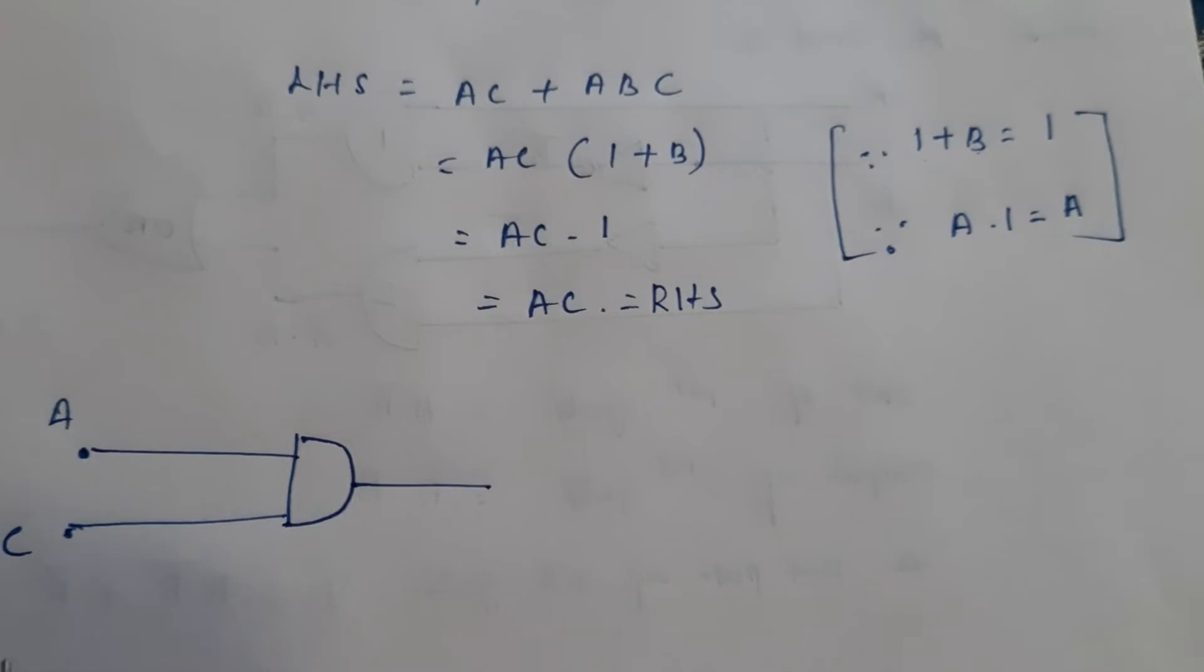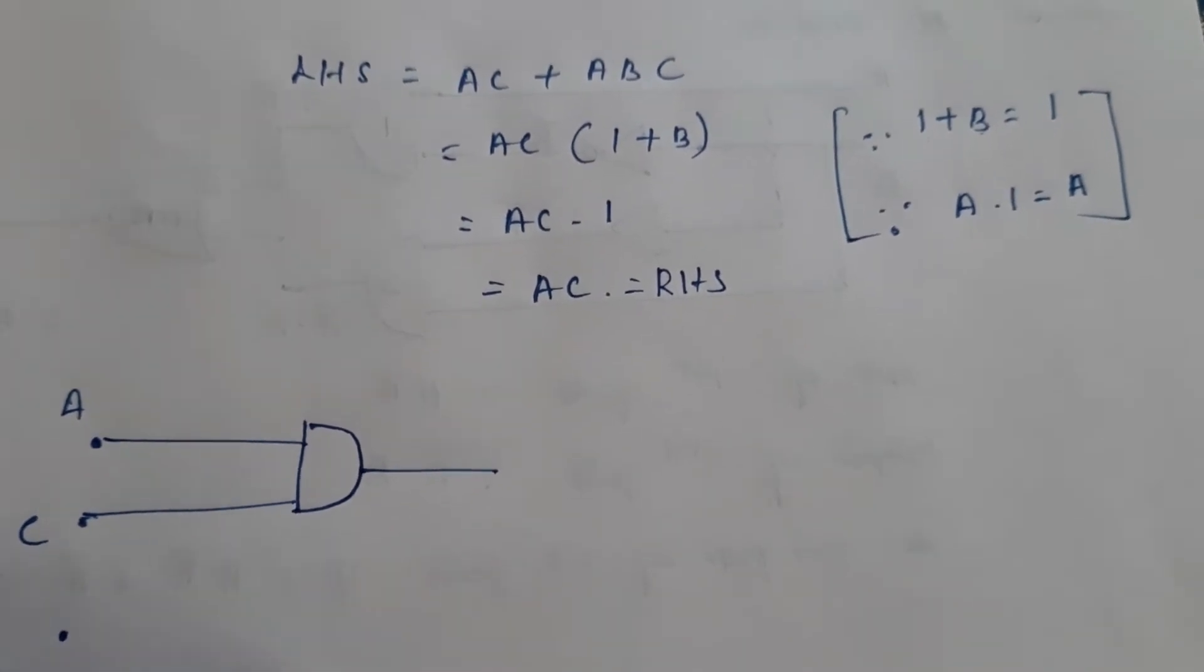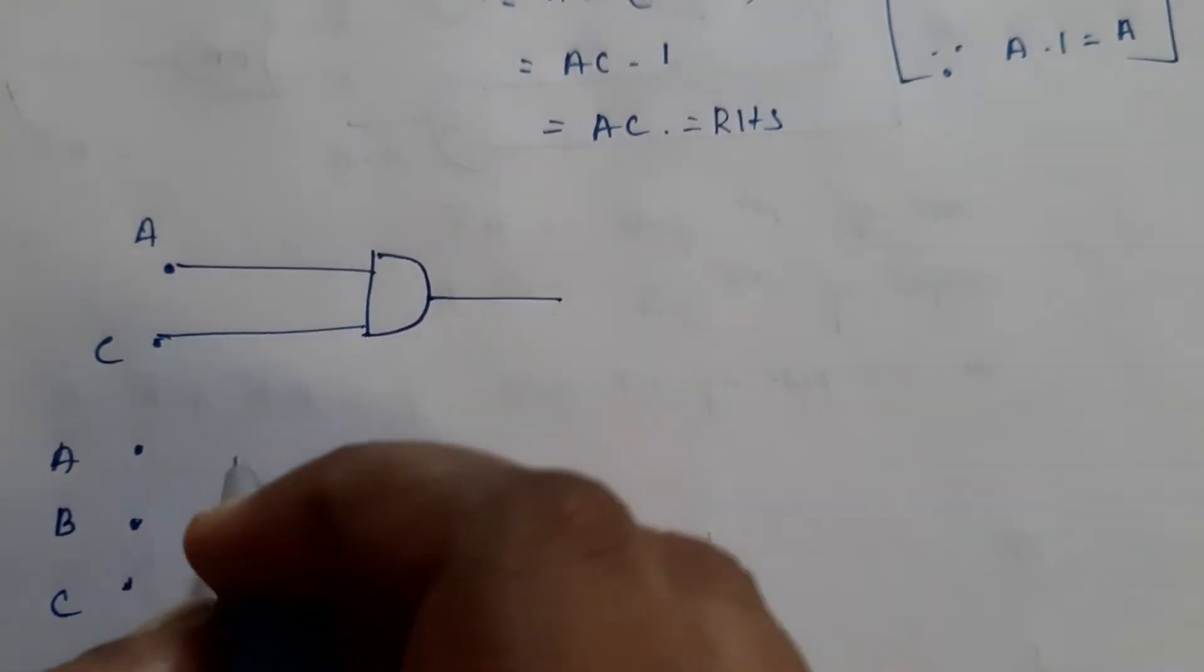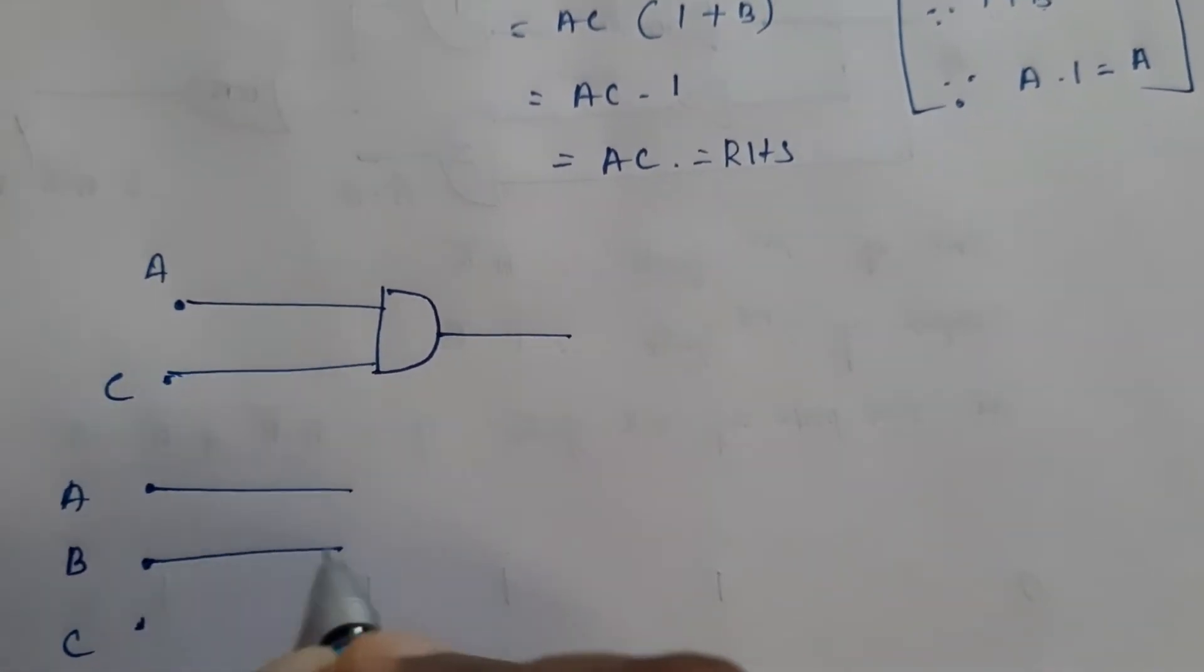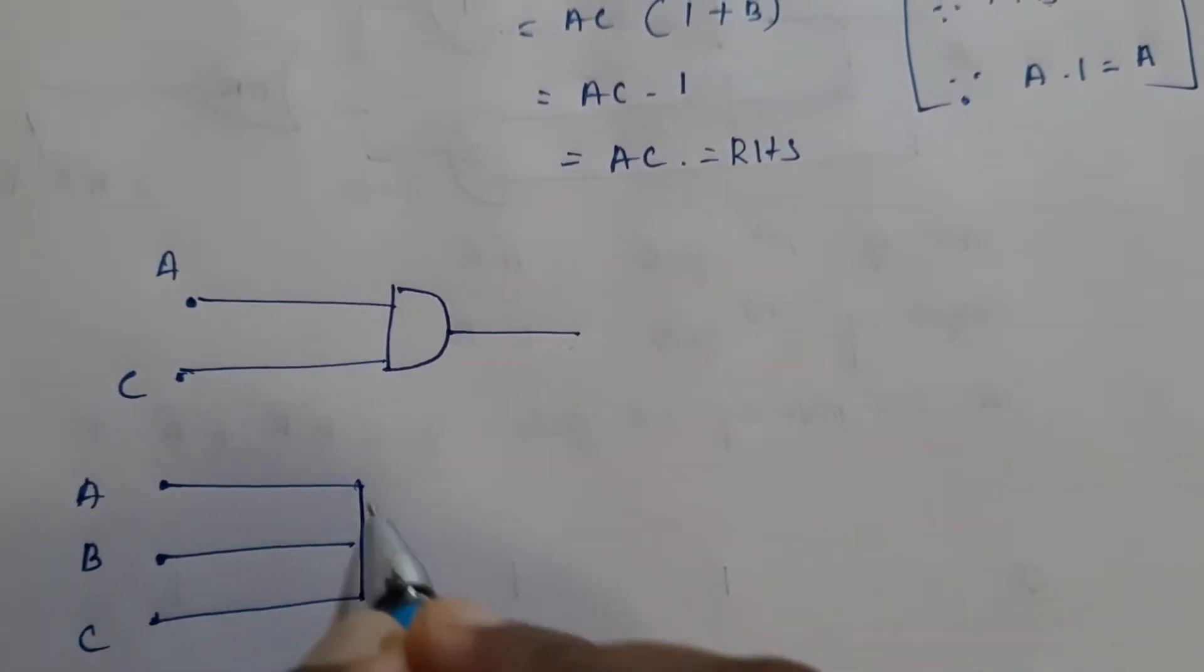Now here A, B, C, three inputs. So A, B, C. Now all the three are ANDed. So here also it is an AND gate.